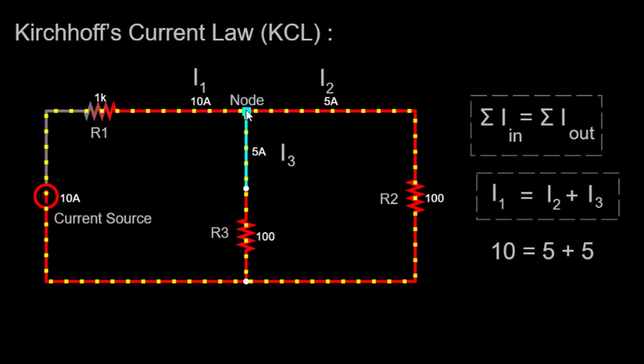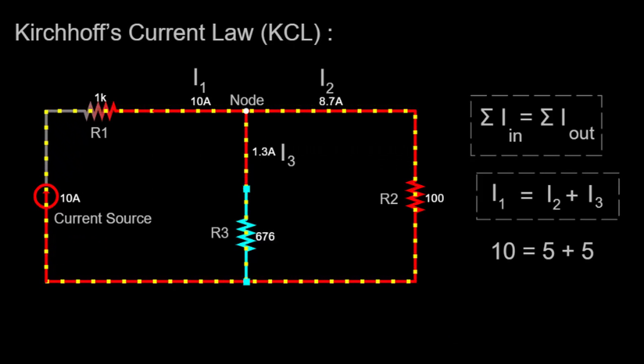To demonstrate Kirchhoff's Current Law in action, we can utilize the circuit simulator to gradually vary the resistance values of R2 and R3. As we change these resistances, it becomes apparent that the sum of currents I2 and I3 always remains equal to I1.